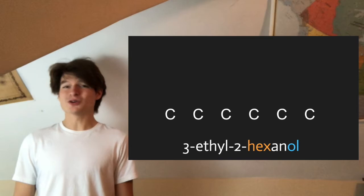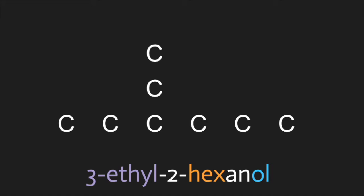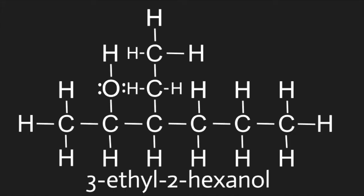Next, we can see that there's an ethyl group, or two carbons, branching off of the third carbon in the chain, so let's go ahead and add those in now. We know that it's an alcohol because we have an -OL ending, so where does that hydroxyl group go? We can see the 2 in front of hexanol, which indicates that the hydroxyl group is on the second carbon in the chain. All we need to do now is add in the remaining hydrogens to make sure that every carbon has four bonds in total. And there we have the expanded structural diagram for 3-ethyl-2-hexanol.